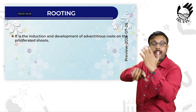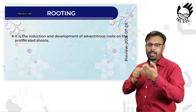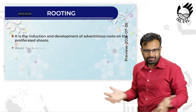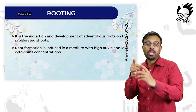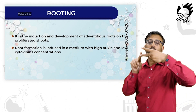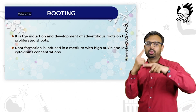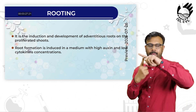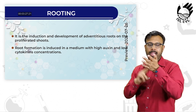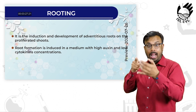Rooting is the induction and development of adventitious roots on the proliferated shoots. Root formation is induced in a medium with high auxin and low cytokinin concentrations.